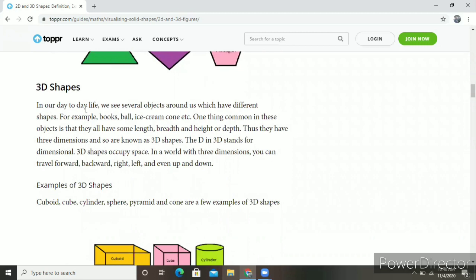In our day-to-day life, we see several objects around us which have different shapes. For example, books, ball, ice cream cone, etc. All these things have in common that they all have length, breadth, and height or depth. Thus, they have three dimensions and are known as 3D shapes.